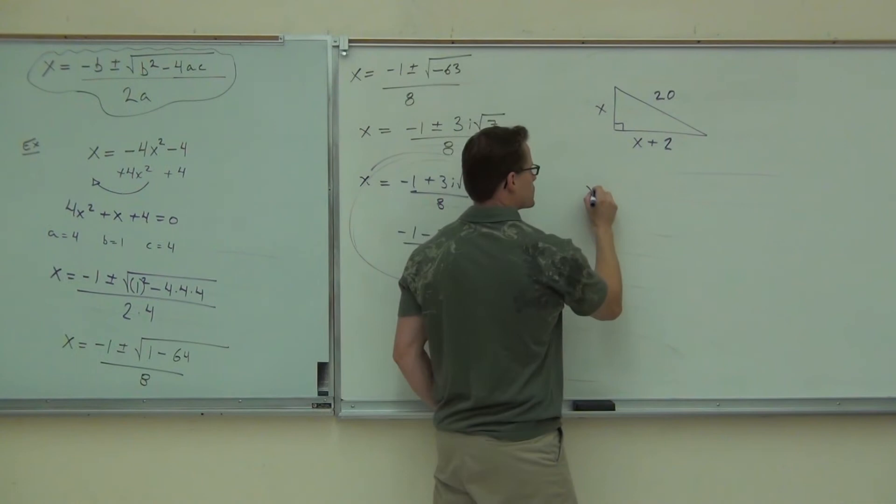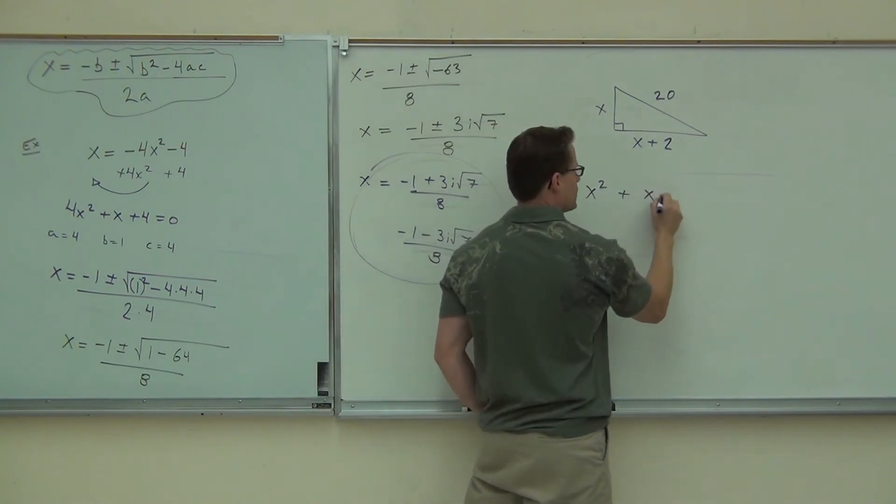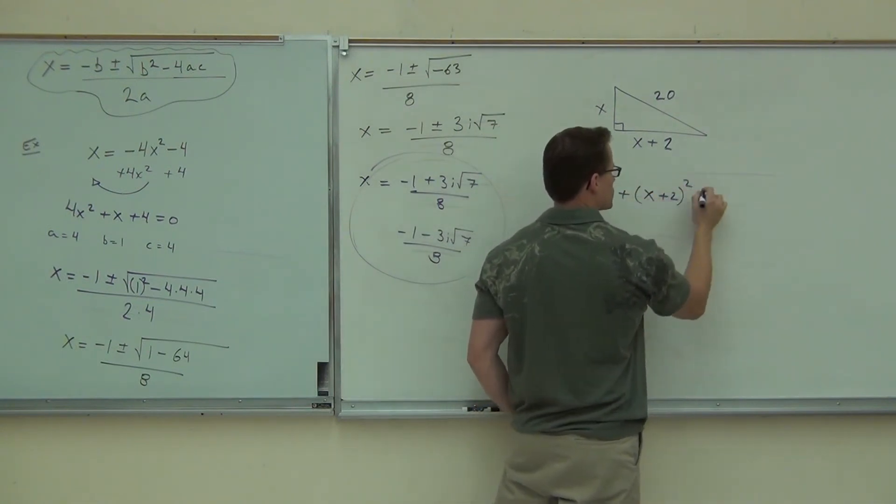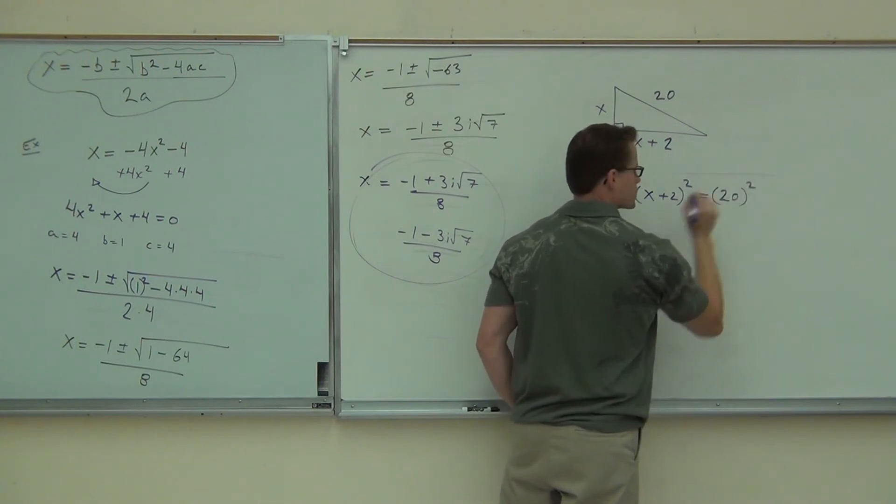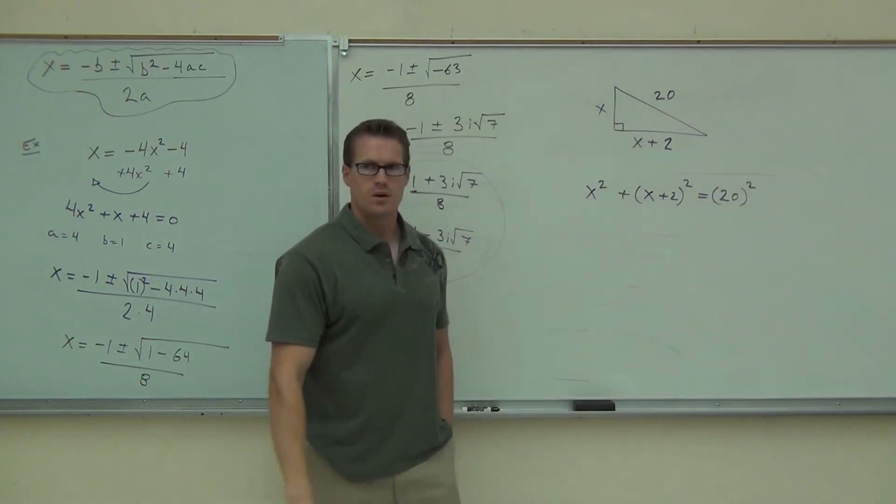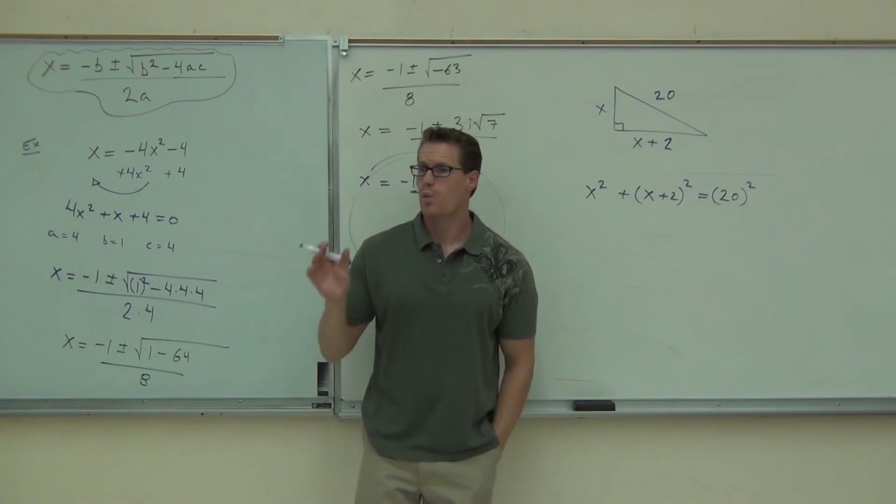Pythagorean theorem says a leg squared plus a leg squared, notice the parentheses, equals the hypotenuse squared. You okay with that? What would you do now?